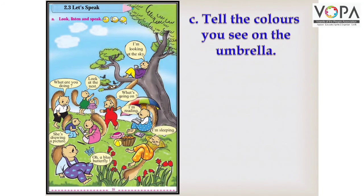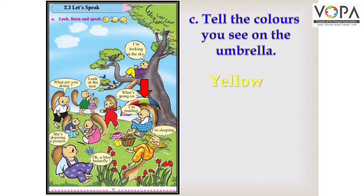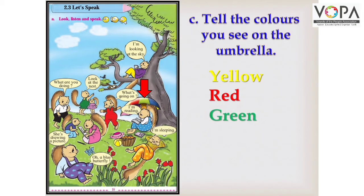On page number 18, Point C: Tell the colors you see on the umbrella. प्यारे बच्चों, देखो इस तस्वीर में आपको एक छाता नज़र आ रहा है। यह है वो छाता जिसे आप छतरी भी कहते हैं। तो आपको इसमें कौन-कौन से रंग नज़र आ रहे हैं? Yellow, Red, Green, Blue, Pink।